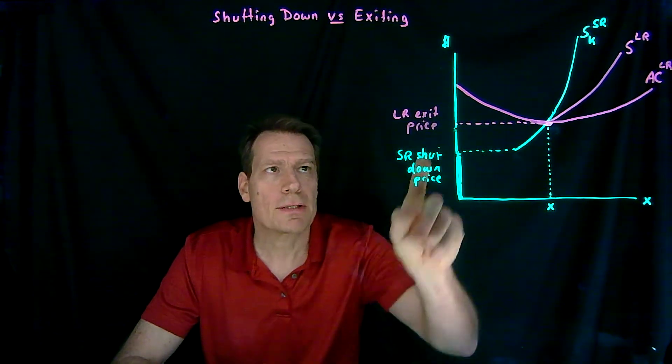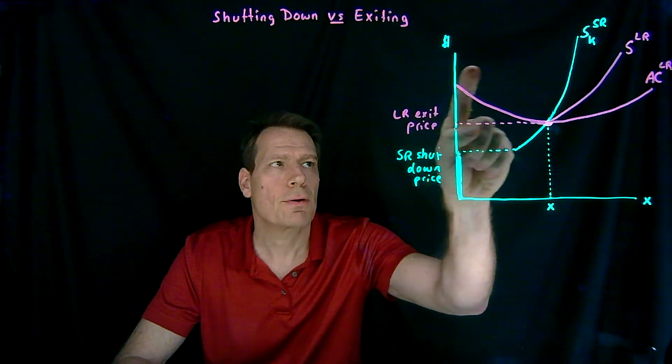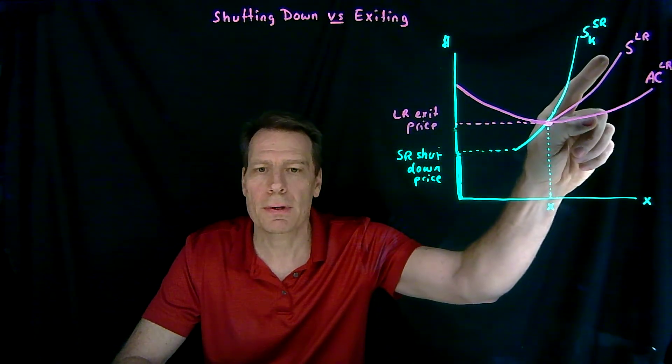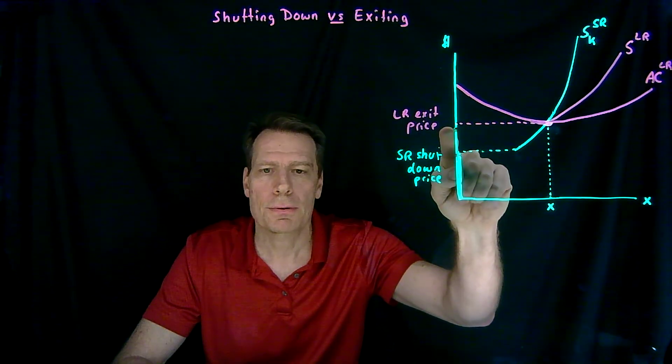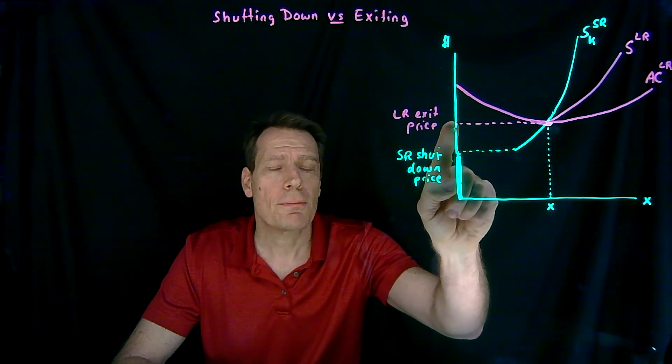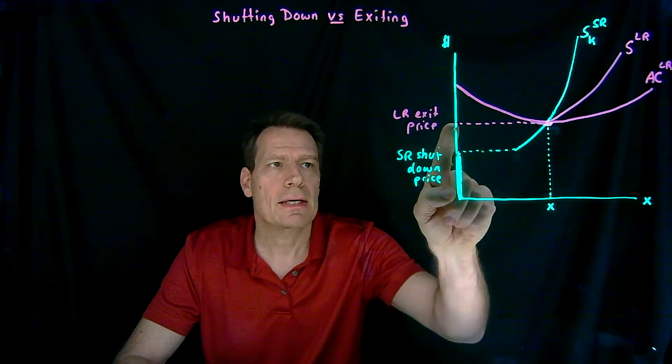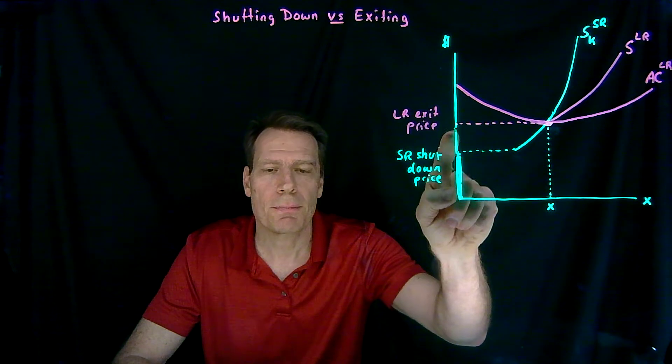So you can now imagine a price starting way up here. When the price is up here, in the long run it will produce along the long-run supply curve. As the price falls, eventually we'll hit this price where the firm, when given a chance, is going to liquidate its capital and exit the industry if the price falls below that.